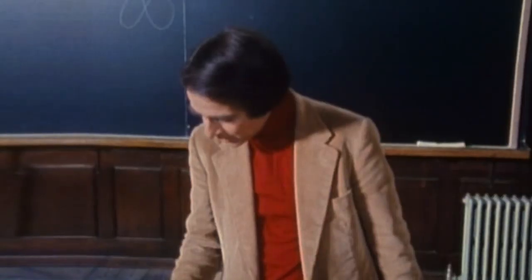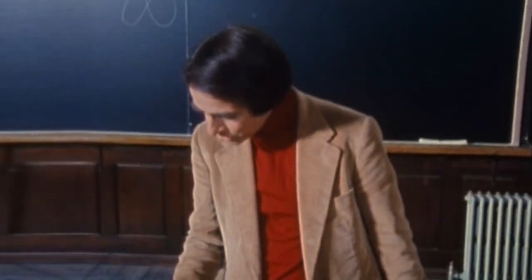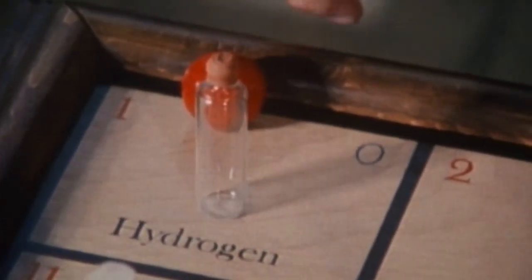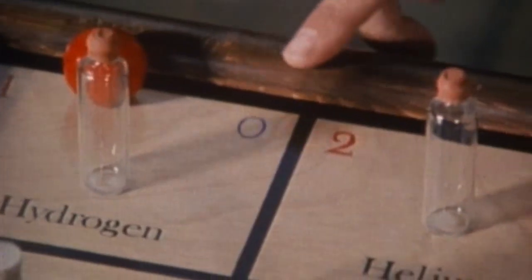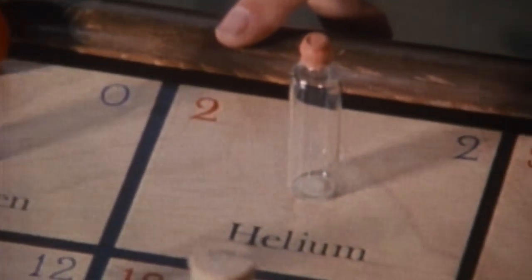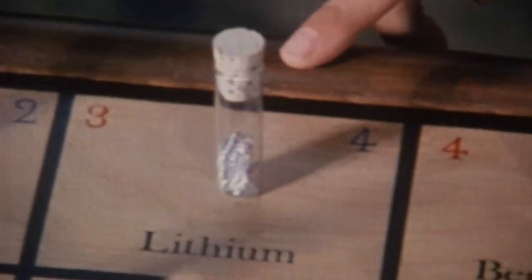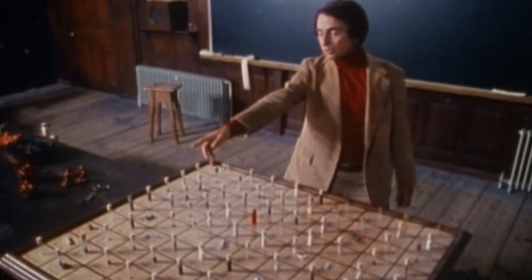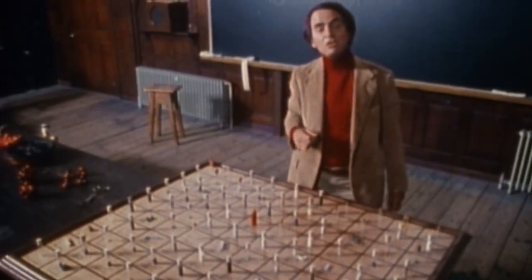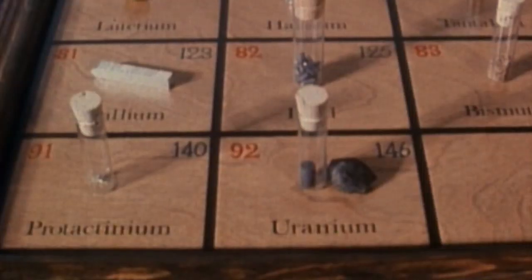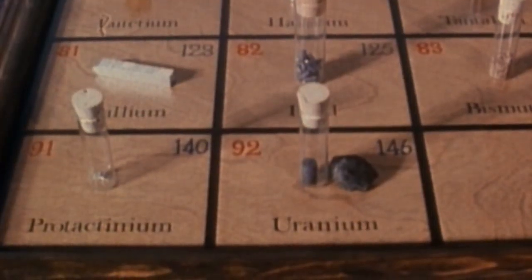If you're an atom and you have just one proton, you're hydrogen. Two protons, helium. Three, lithium — all the way to 92 protons, in which case your name is uranium.